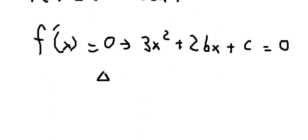So delta, the discriminant, is 2b squared minus 4 multiplied by 3 and c.